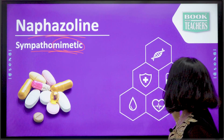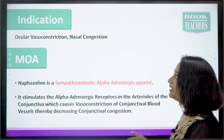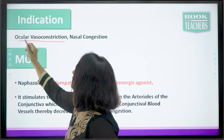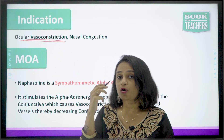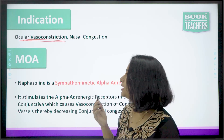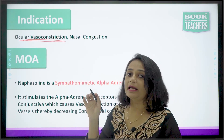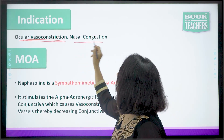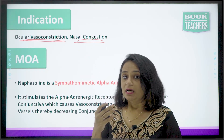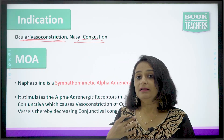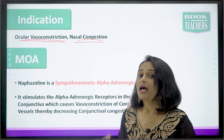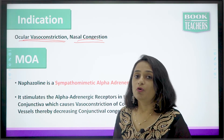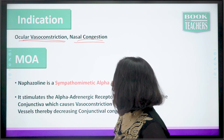Naphazoline is indicated in ocular vasoconstriction — in cases of conjunctivitis — and also in nasal congestion where there is high nasal congestion or rhinitis. At that time, naphazoline is indicated. Now we'll see the mode of action of naphazoline.